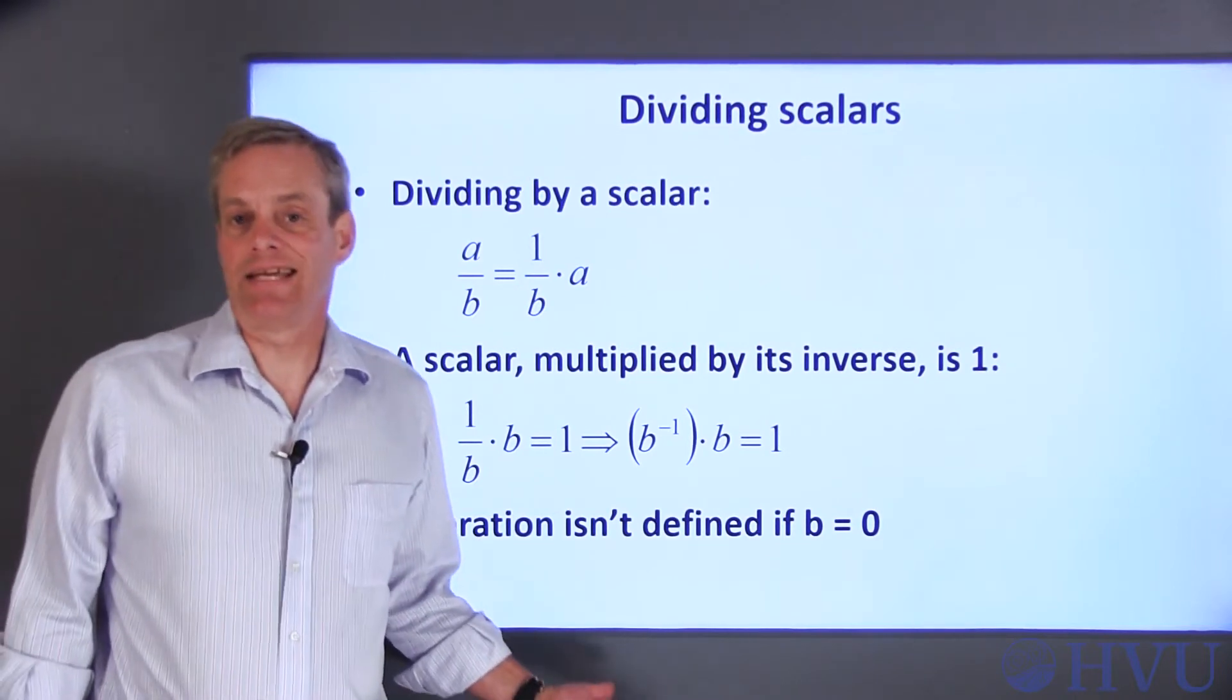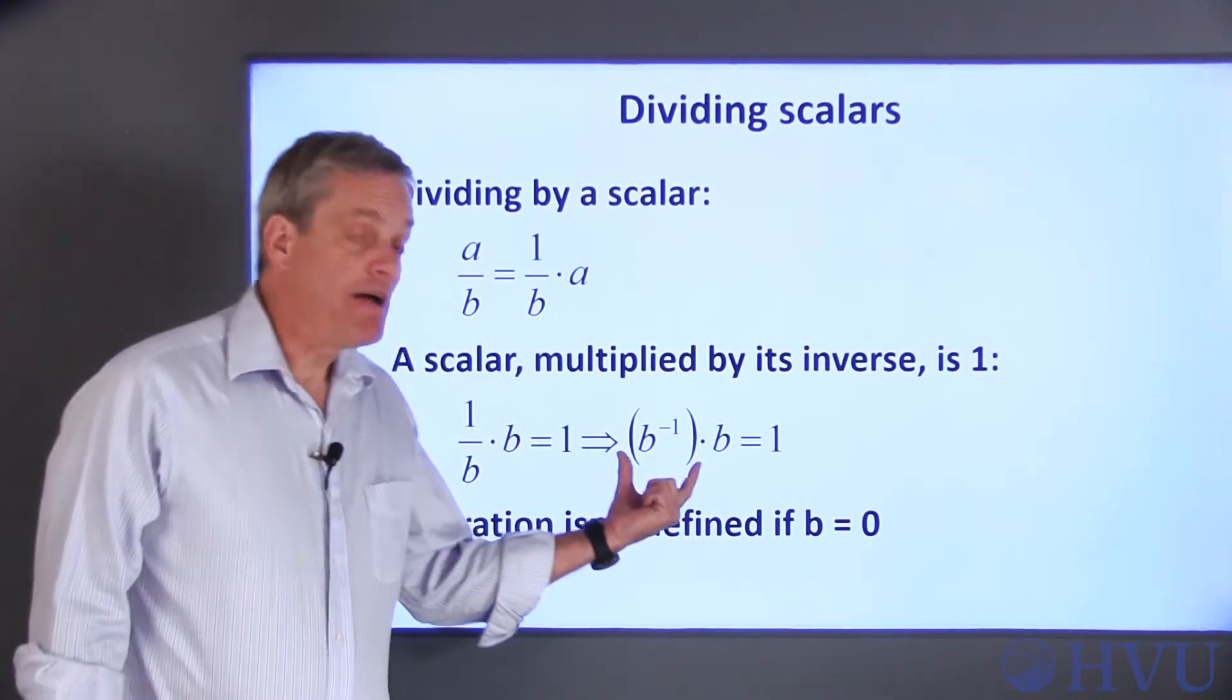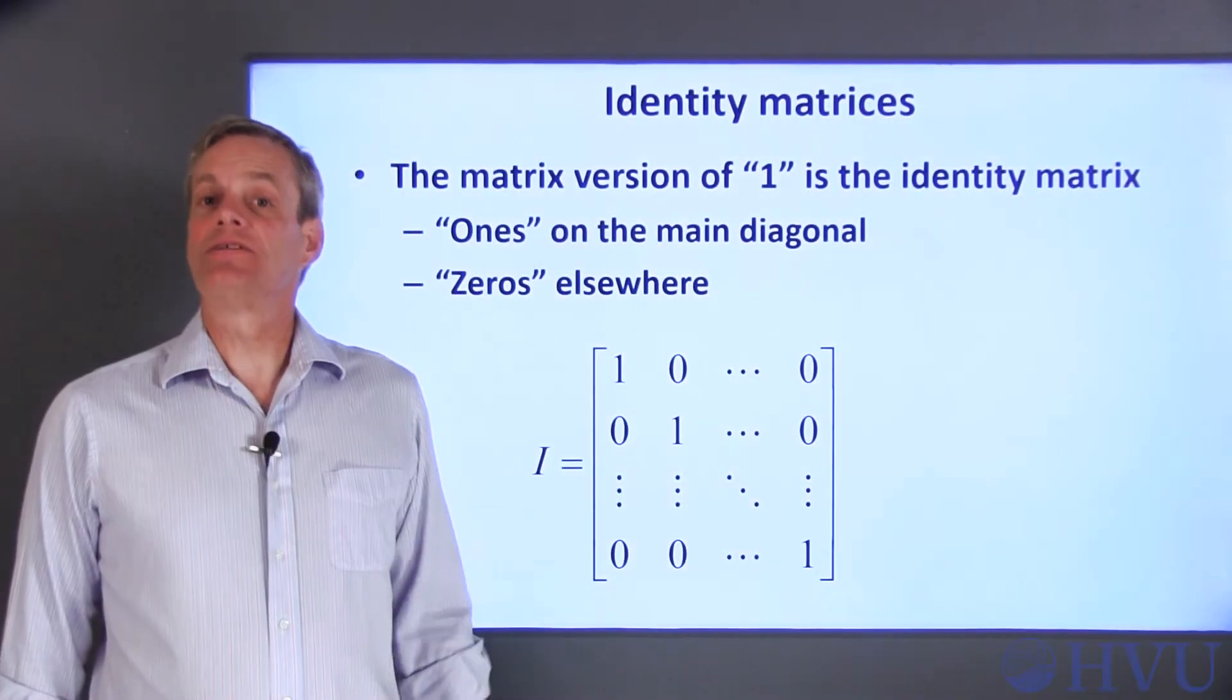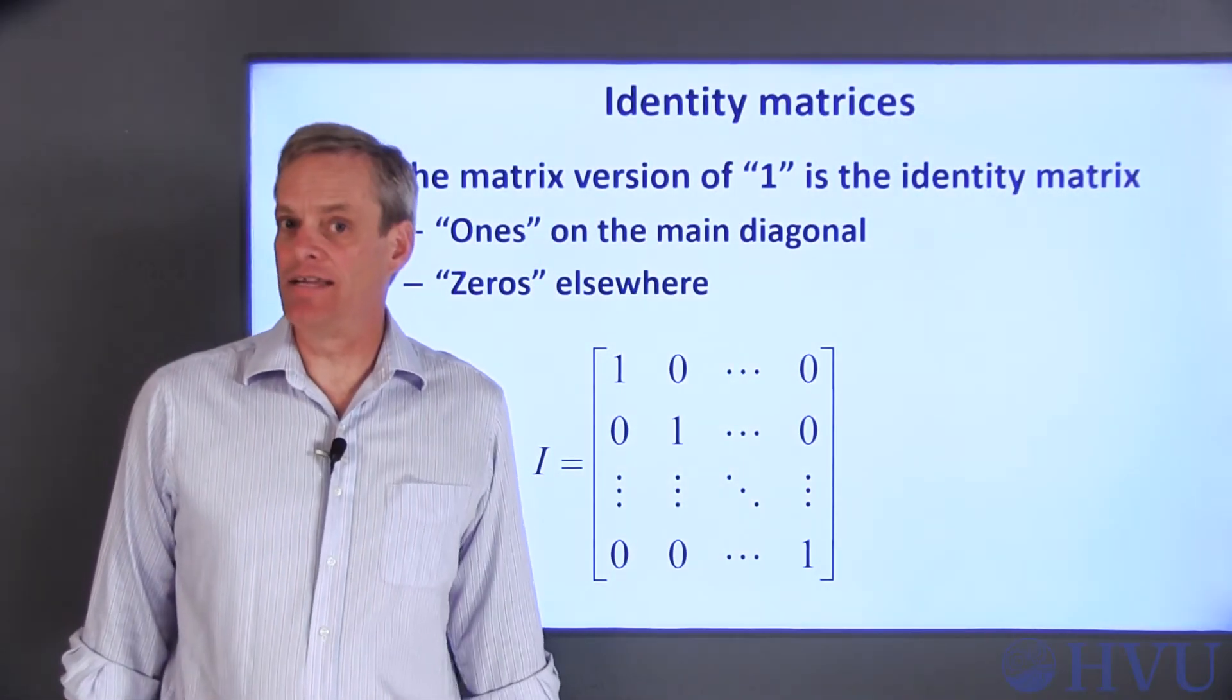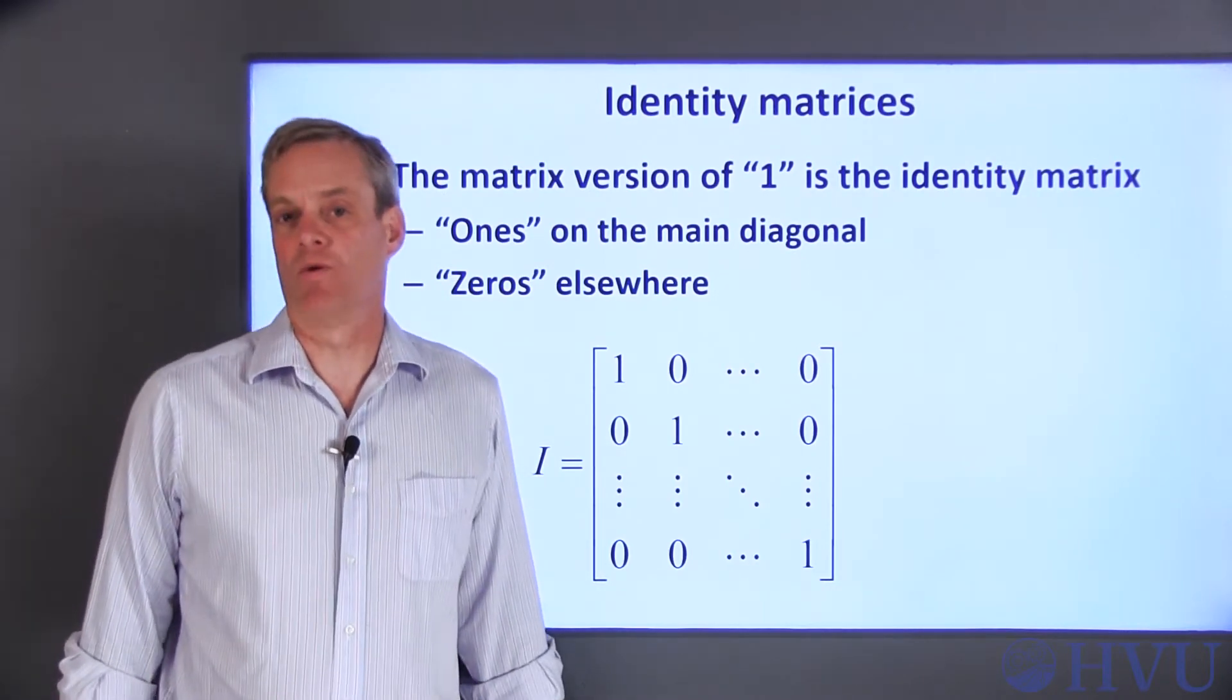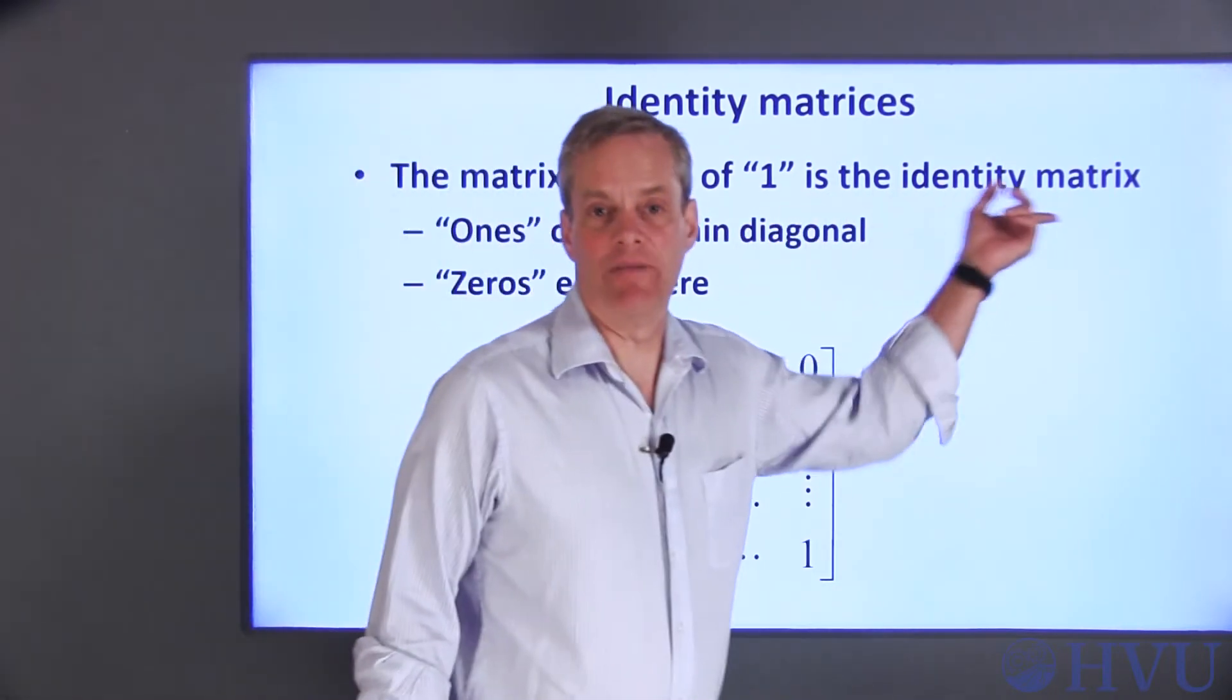When I'm performing division-like processes in linear algebra, I'm actually multiplying by a matrix inverse. Since a scalar inverse is defined in terms of the number 1, we need a matrix version of the number 1, which is called an identity matrix.